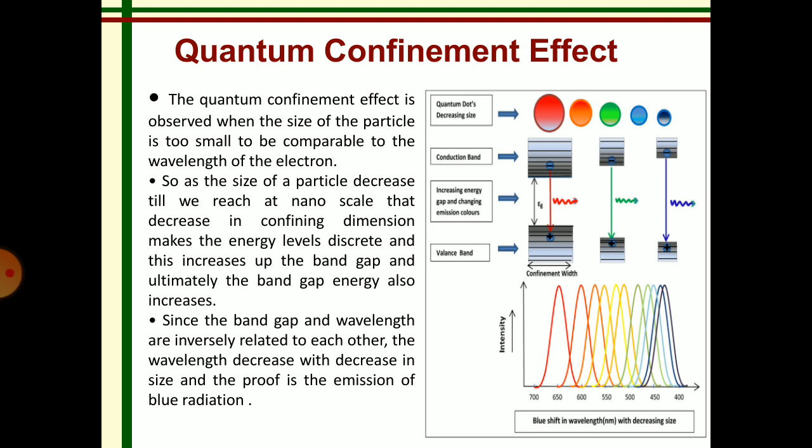One more diagram indicates the variation of intensity with wavelength. When the size of the particle goes on small, the band gap also increases, then automatically band gap energy also increases. The size of the particle is inversely proportional to band gap, but the band gap is directly proportional to wavelength. The wavelength decreases with decreasing the particle size.